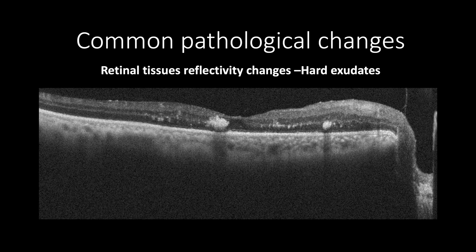Hard exudates will appear as increased hyperreflective irregular consolidated masses in the outer retinal tissues, which usually cast a shadow artifact causing hyperreflectivity of the underlying retinal tissues.